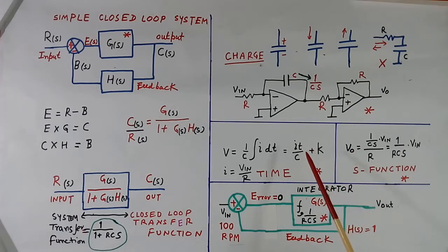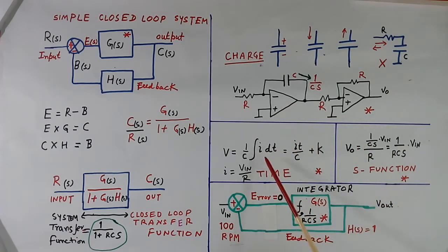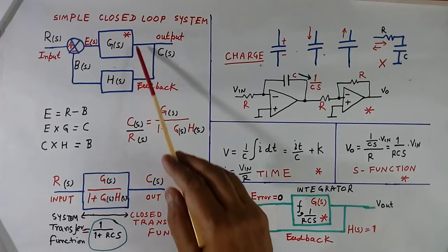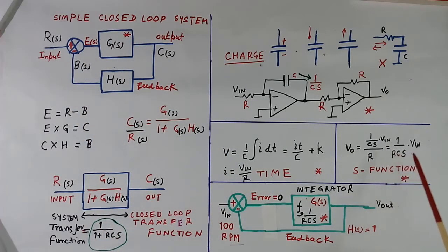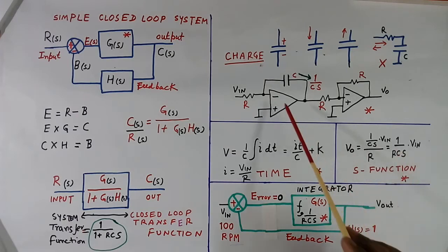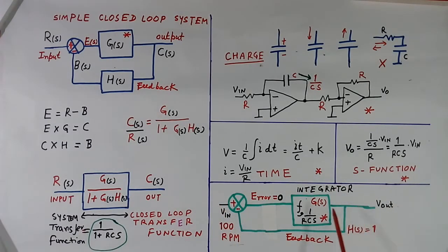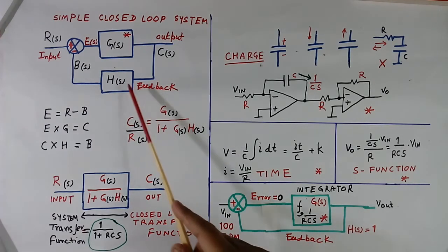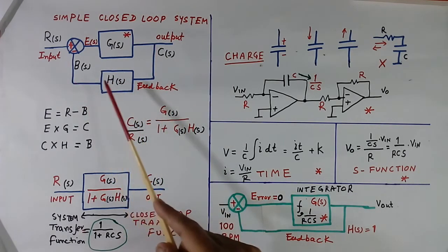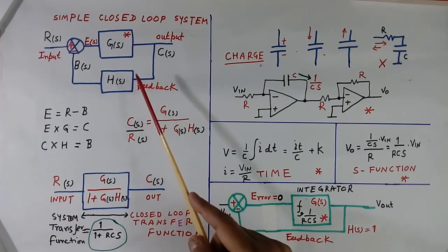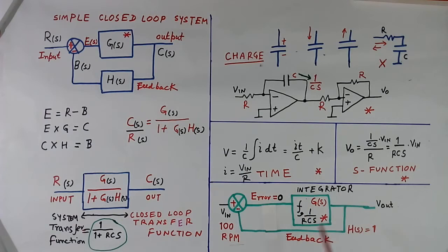When we do mathematics, the time function becomes difficult. So when calculation is done, we always use S-function, not time function. Time function is used to understand how the system works. Now we have another block — this is the same block. For the time being, we assume H equals 1, meaning it is directly connected. With H equal to 1 it will be easier to understand the concept of the control system.